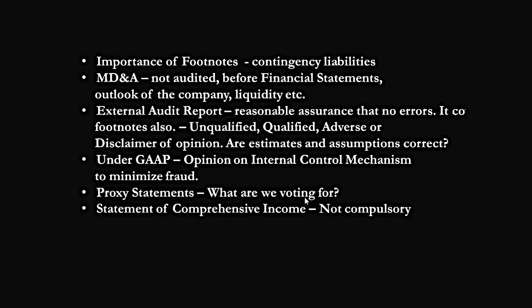The most important aspect of an external auditor is to ascertain whether the estimates and assumptions are correct. The business is assessed on a going concern basis, and sometimes companies tend to recognize profit before it has actually been achieved. Auditors find out whether the assumptions have been made correctly. Under U.S. GAAP — Generally Accepted Accounting Principles — the external auditor also has to give an opinion on the internal control mechanism to minimize the chances of fraud. This is not required under IFRS.